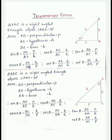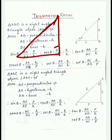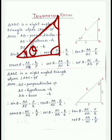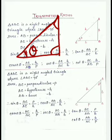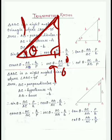Look, this is a triangle. If there is a 90-degree right angle, then the other angles will obviously be acute — meaning less than 90 degrees. The opposite side of the right angle will be the hypotenuse.